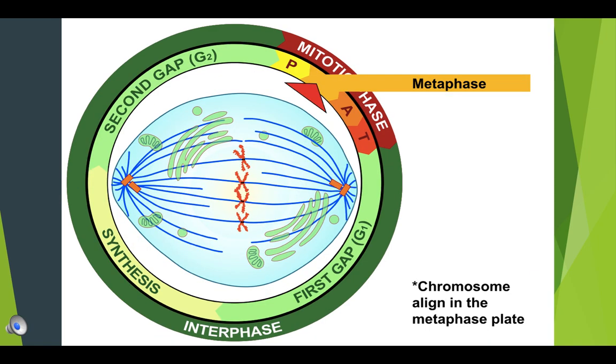In metaphase, each chromosome gets attached to the spindle by its centromere, and chromosomes line up in one plane at the equator.